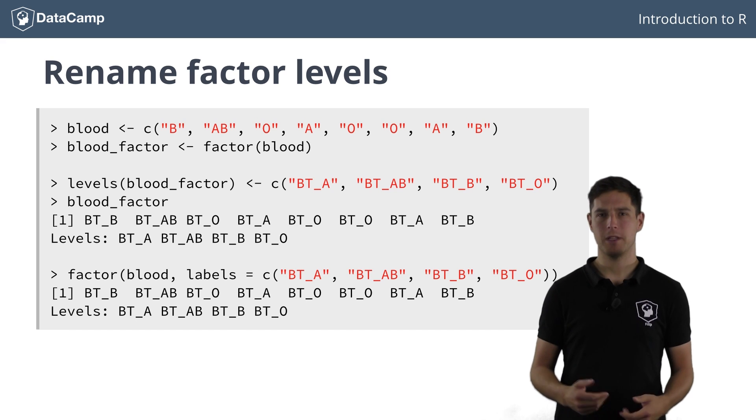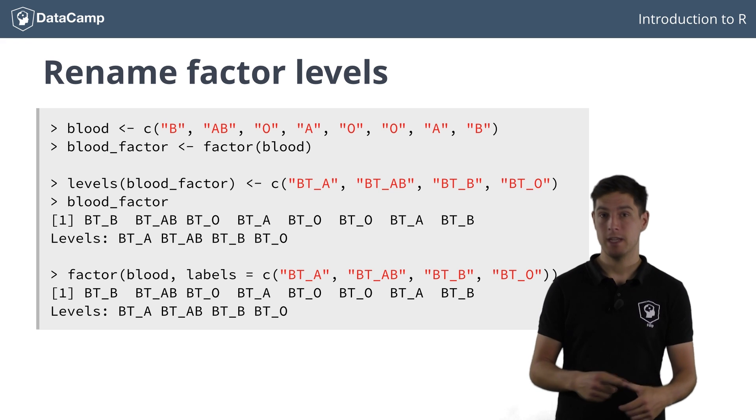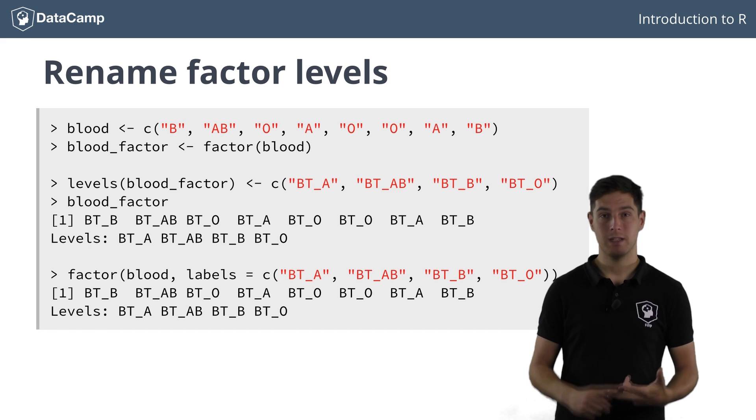You can also specify the category names or levels by specifying the labels argument inside the factor function. I admit it, it's a bit confusing. For both of these approaches, it's important to follow the same order as the order of the factor levels, first A, then AB, then B, and then O.